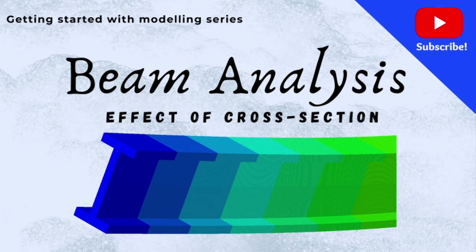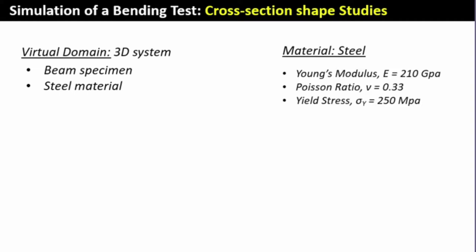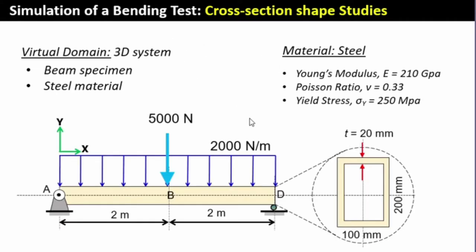Let's look at the PowerPoint slide I've created for this. The objective here is on simulation of bending. Our domain is a virtual 3D system — a beam made of steel. The material will be steel with the Young's modulus given, the Poisson's ratio, and the yield stress. The problem we want to simulate is a typical undergraduate textbook example: a simply supported beam that is four meters long, carrying a distributed load of 2000 N/m with a central concentrated force of 5000 N. On the left side at A we have the pin support and on the right side we have a roller support.